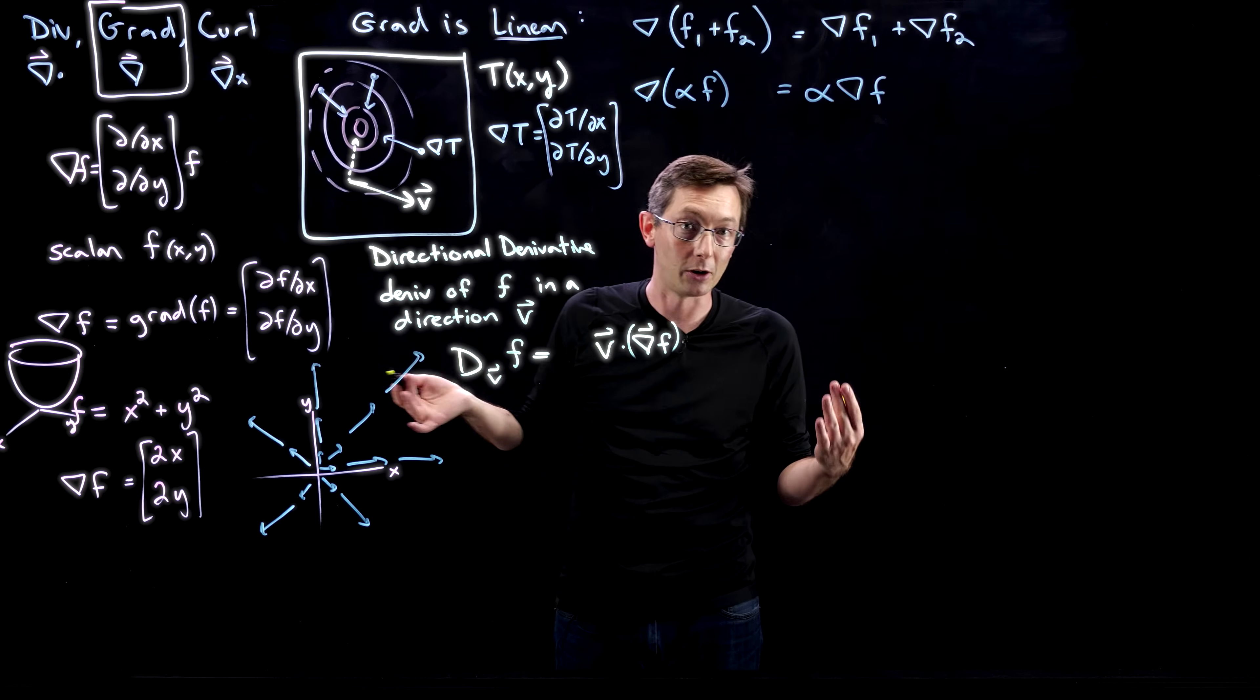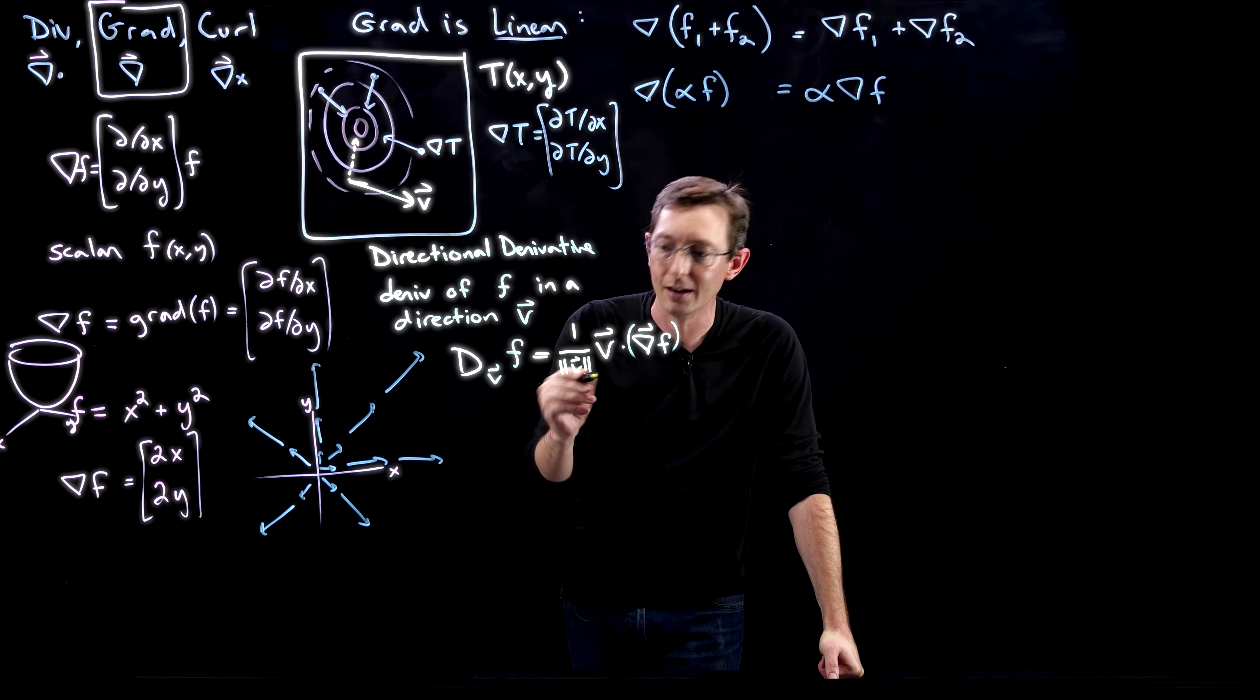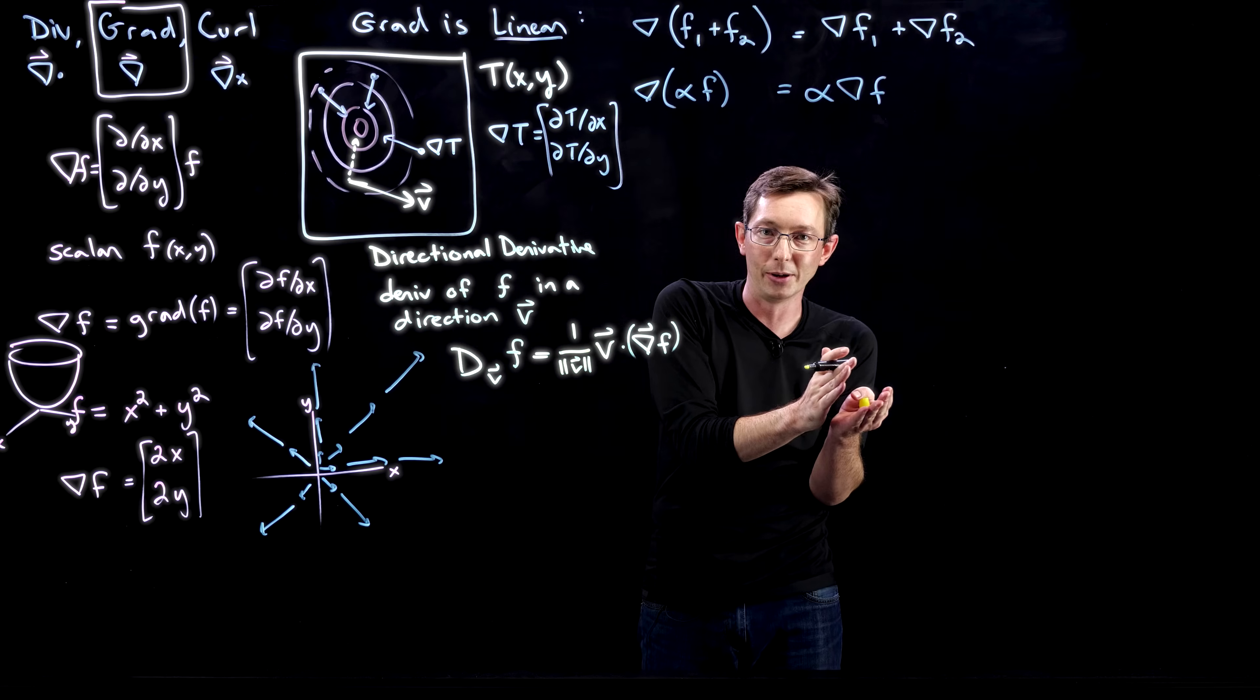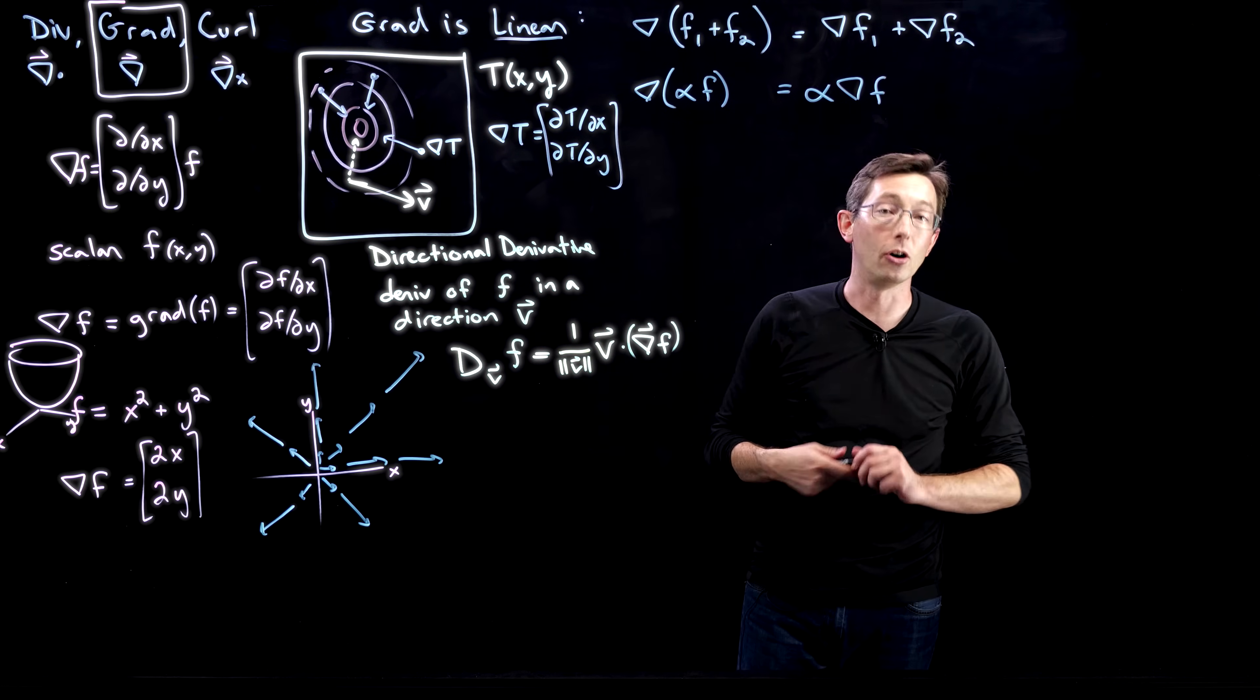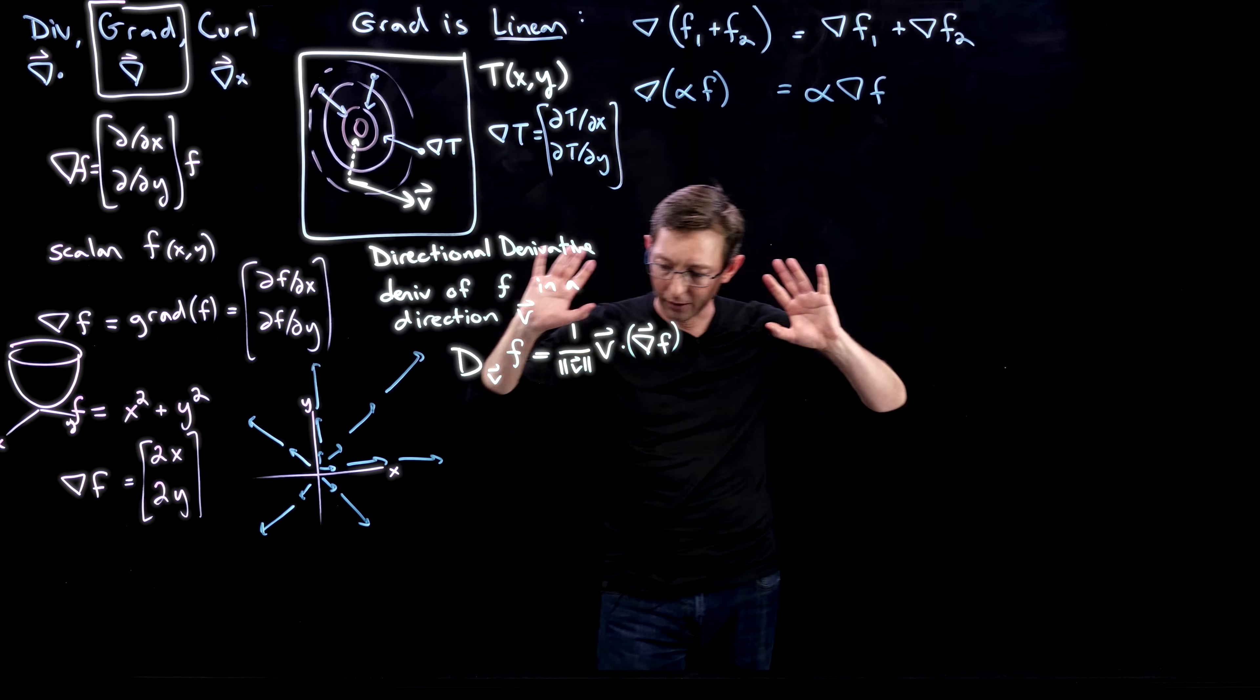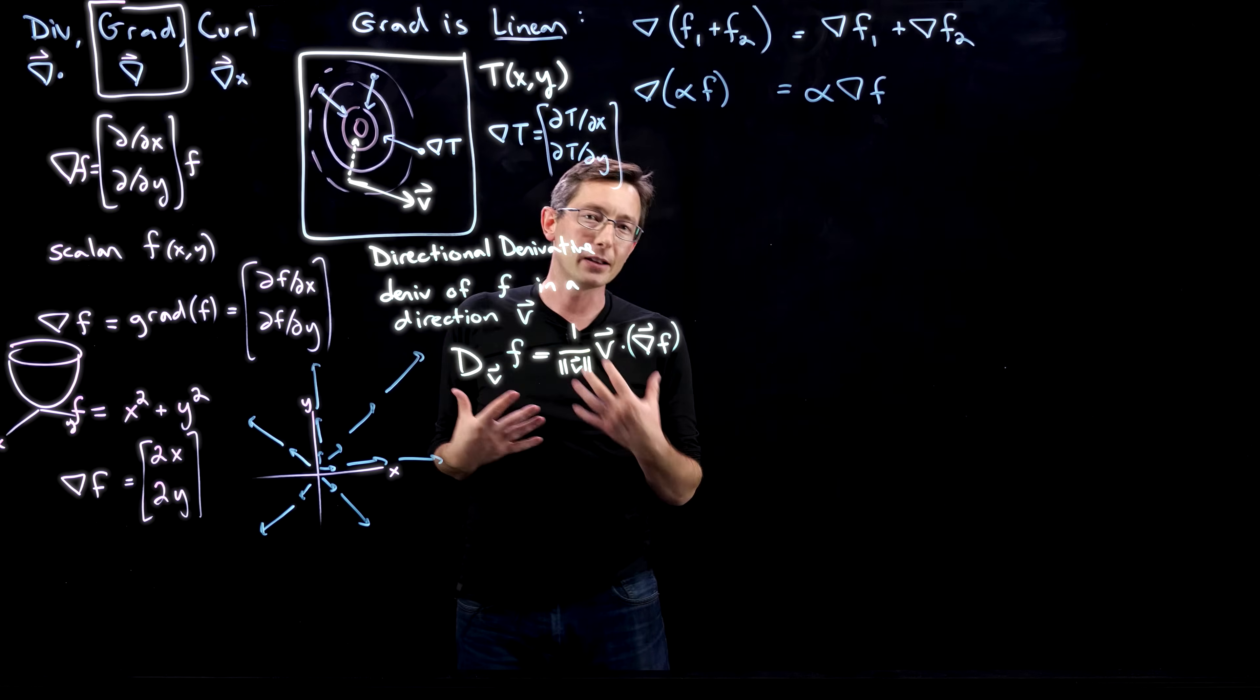You have to normalize by the length of this v, because someone might give you a v that's 10 units long or 0.1 units long, and it shouldn't matter what the length of v is. So the directional derivative, also super important.